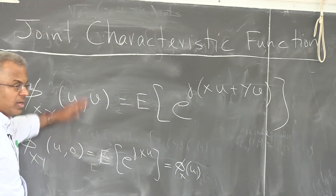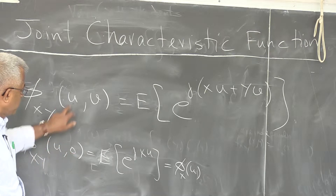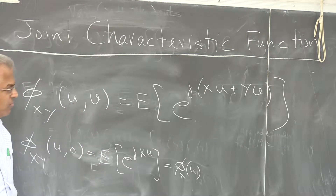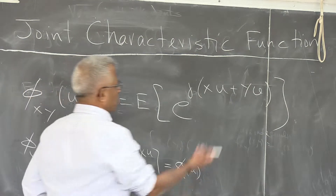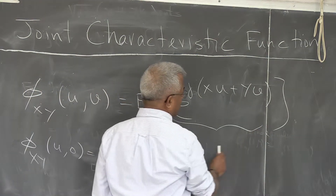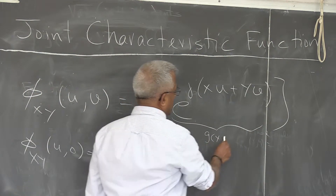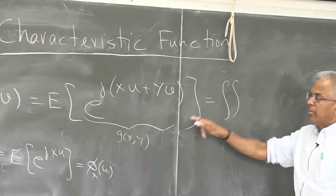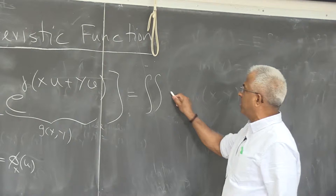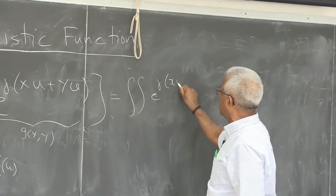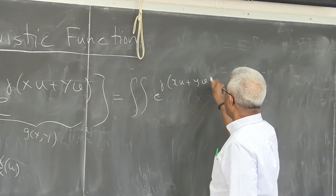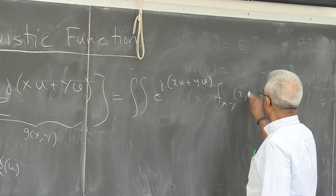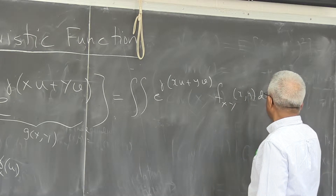This joint characteristic function has got both the characteristic functions embedded in it. You put u equal to 0 and you get the characteristic function of Y. If you think of this as g(x,y), then this is simply the expected value — a double integral of g(x,y) — where g(x,y) is e raised to j(xu + yv) multiplied by the joint density function dx dy.